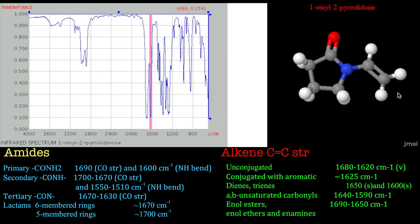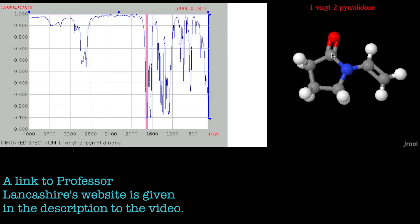So look out for the carbon-carbon double bond and the carbonyl of the amide, which comes at about 1700 wavenumbers. That's it for now.